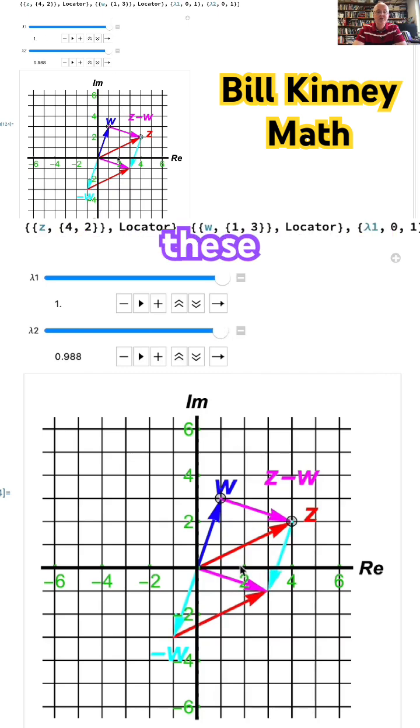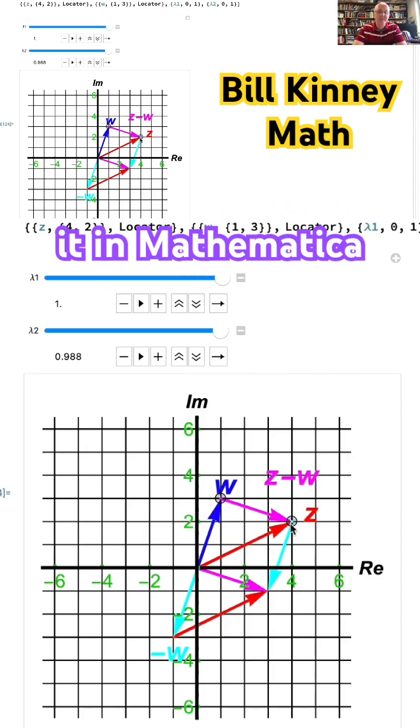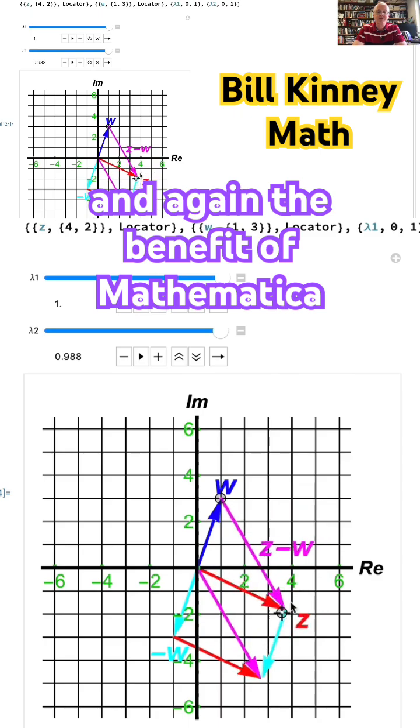So these two pink vectors are both representing z minus w in the same ways that I showed you by hand. This is how you can do it in Mathematica, and again the benefit of Mathematica is you can click on these things right here.